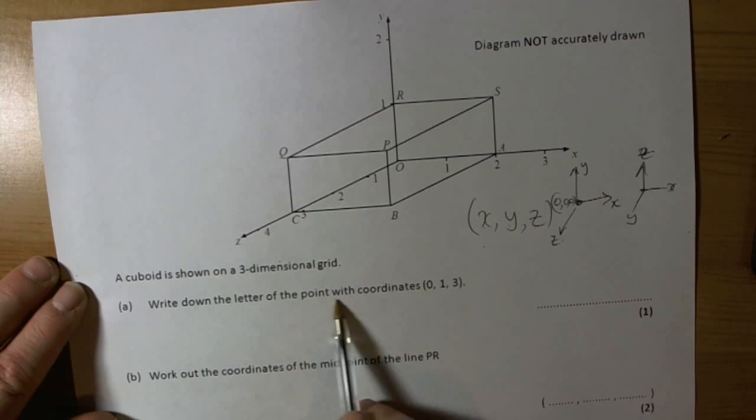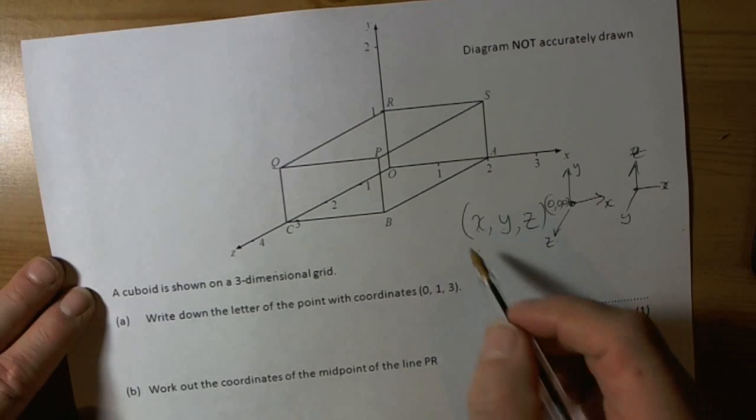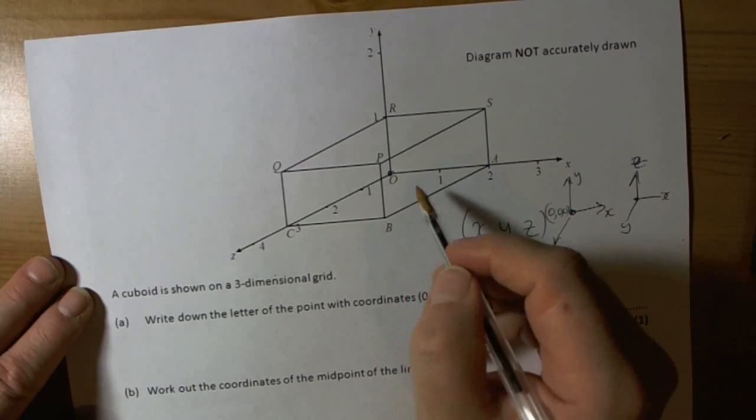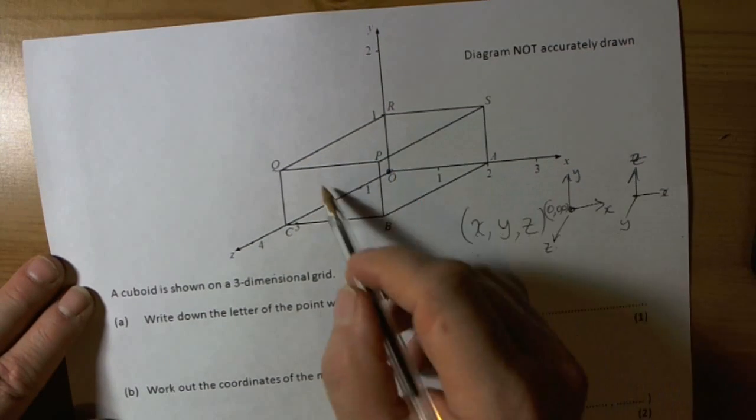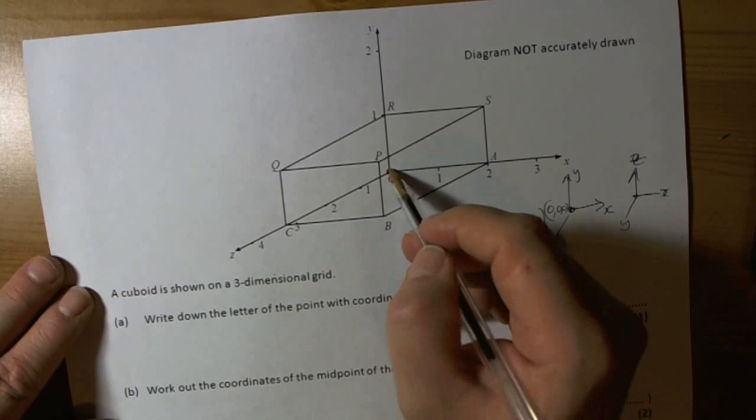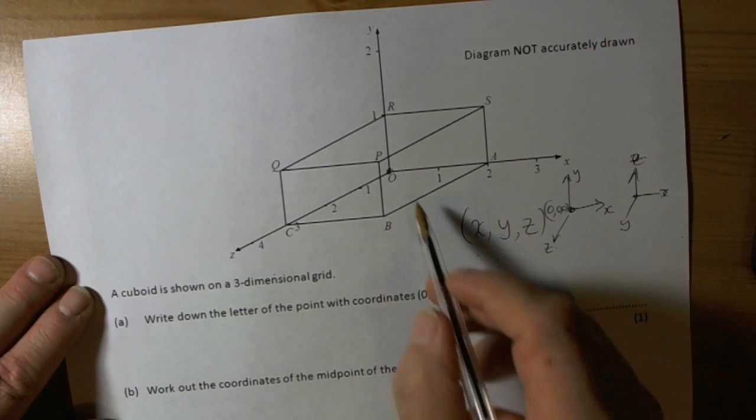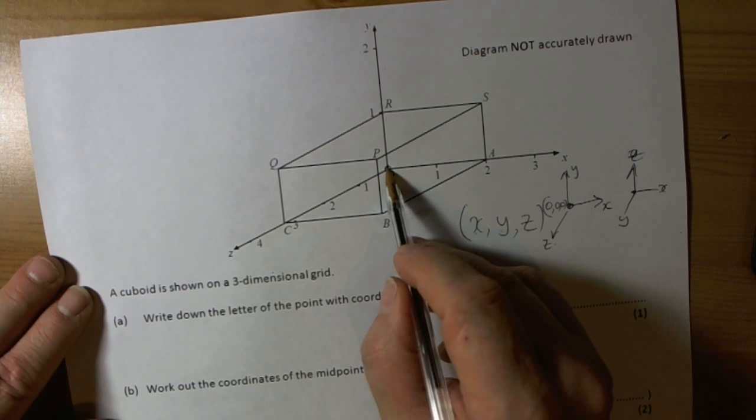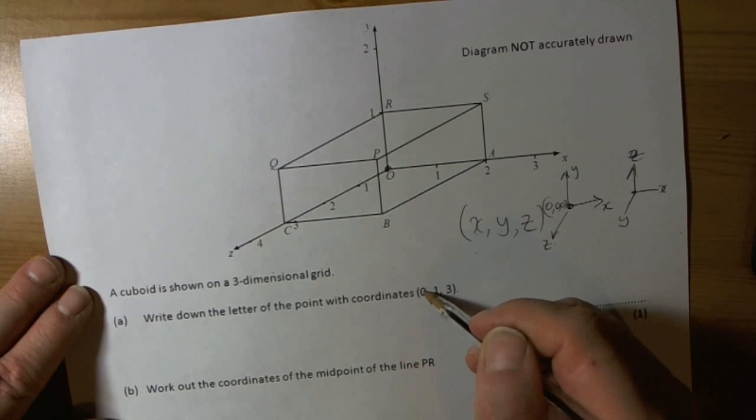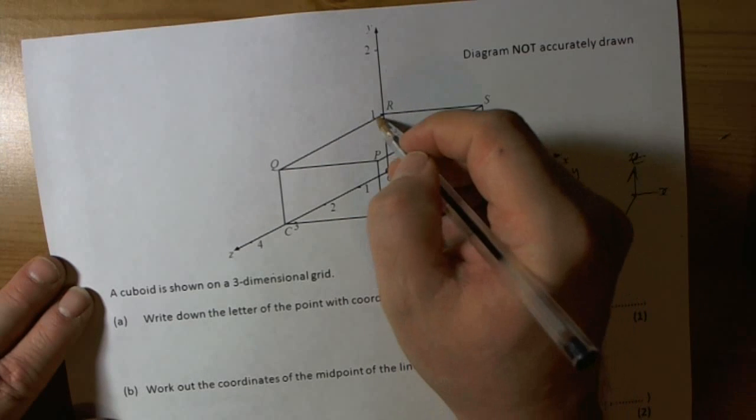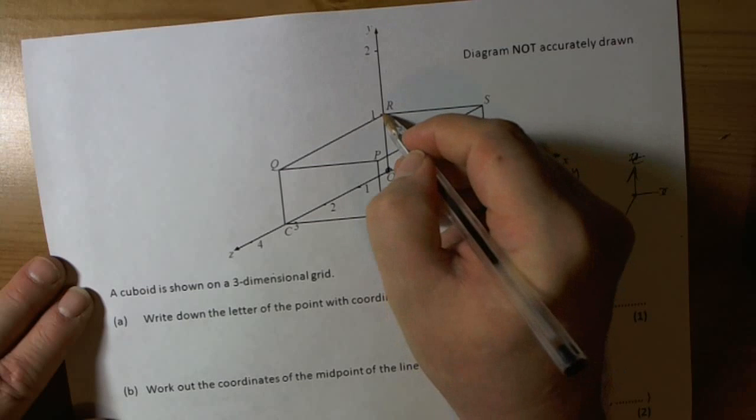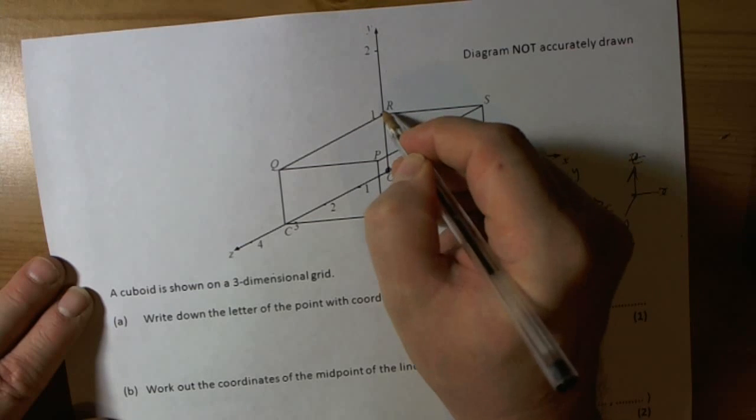So let's have a look. Write down the letter of the point with coordinates (0, 1, 3). So we always start at the center, and we follow the edges of the box to help us decide where we're going. So it's telling us to go 0 on the X, so we haven't moved, so we're still here. It's telling us to go 1 on the Y, so in other words we've come up to this point here. We've gone 1 on the Y, so we're there so far.